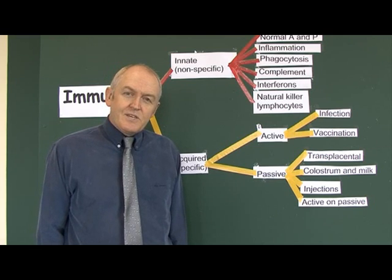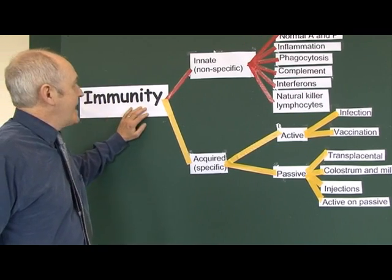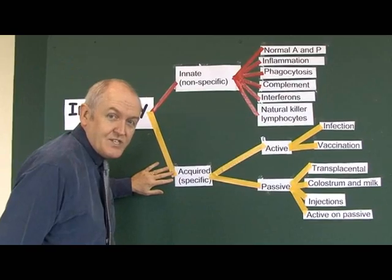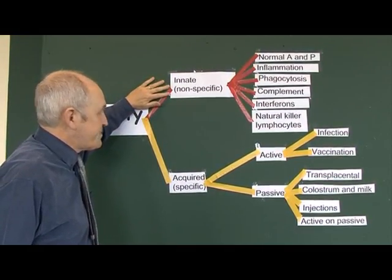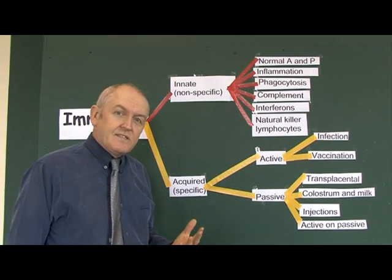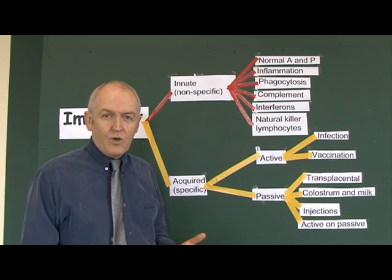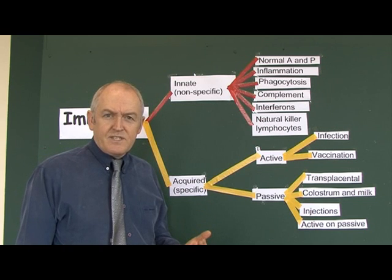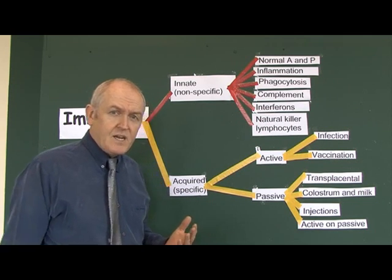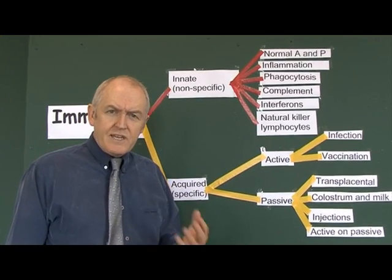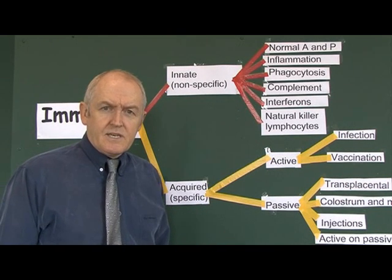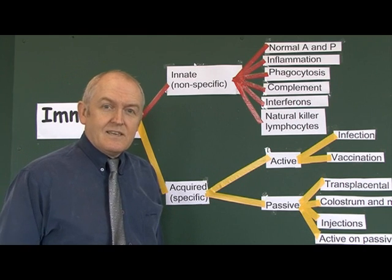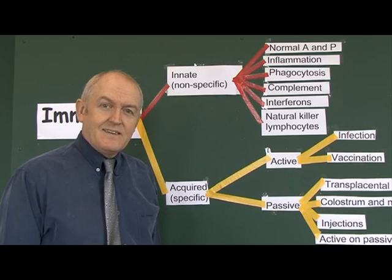Classically, immunity has been divided into two types: innate immunity, which is non-specific, and acquired immunity, which is specific. Innate means that this is inborn — we possess it as a result of the physiology we're all equipped with. It's non-specific, meaning it acts against a wide variety of potentially infecting organisms. With innate immunity you're already immune; you don't have to learn how to be immune — it's already there.